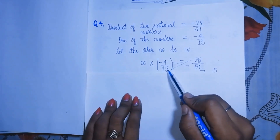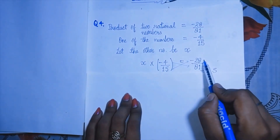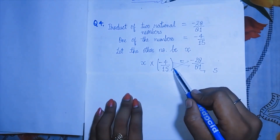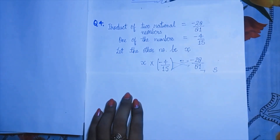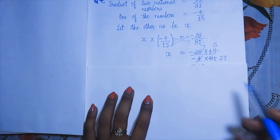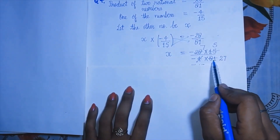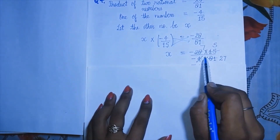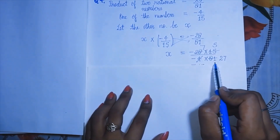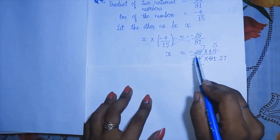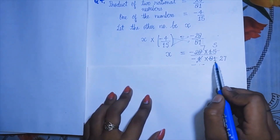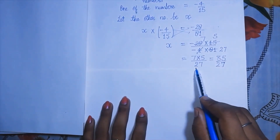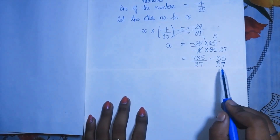Let the other number be x. So: x times minus 4 by 15 equals minus 28 by 81. Moving minus 4 by 15 to the right-hand side, we get x equals 28 by 81 times 15 by 4. Simplifying: 4 divides 28 seven times, and 15 and 81 are both divisible by 3, giving 27 and 5 respectively. So the answer is 7 into 5 over 27, which is 35 by 27. That is the required number.